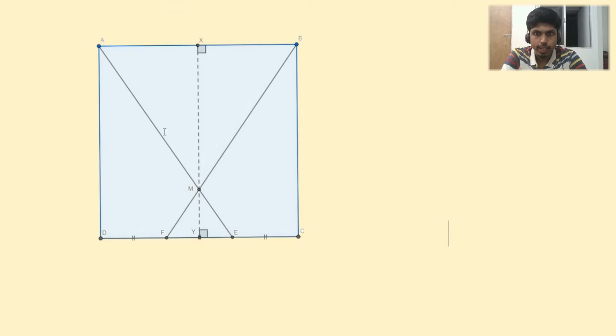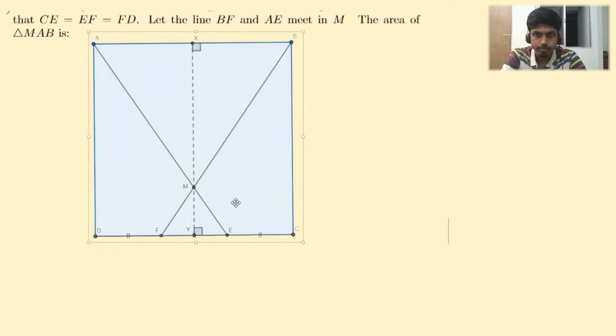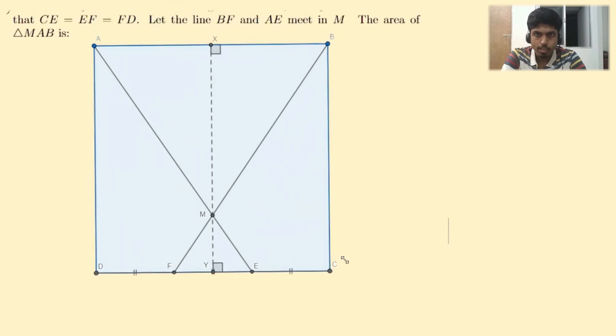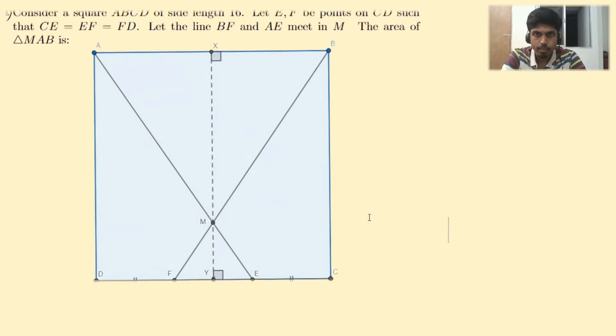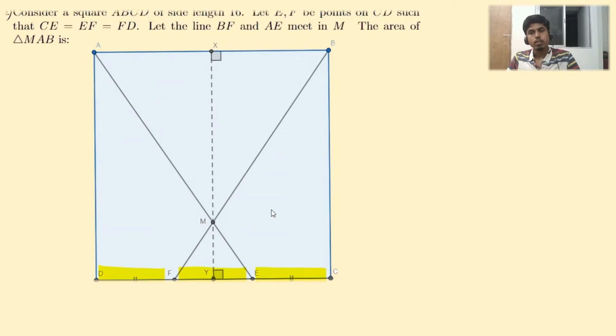Here's the diagram. As you can see, we have the points E and F on the segment CD, such that CE equals EF equals FD. In other words, points E and F trisect the segment CD with E being closer to C.